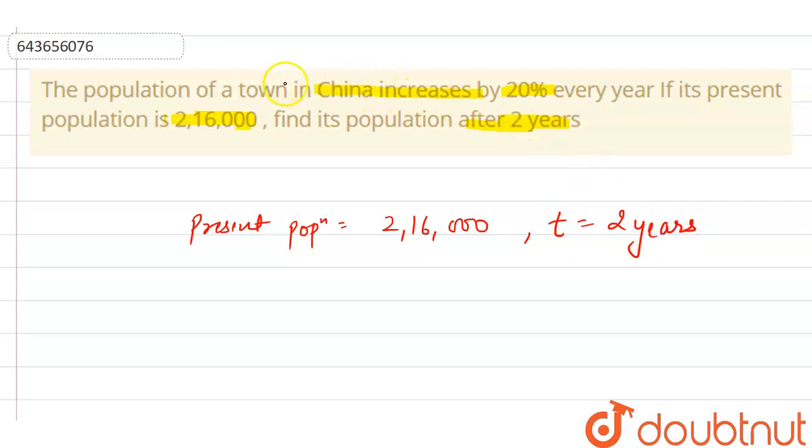The question says population increases by 20% every year, which means the rate r equals 20%.